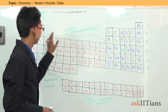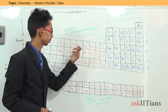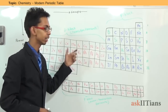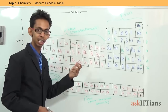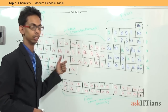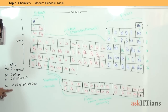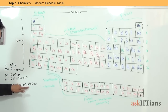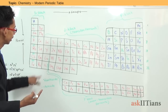Similarly, in D block elements, when we write the electronic configuration of an element belonging to D block, we find the last electron enters the D subshell. For example, Scandium has the electronic configuration 1s2, 2s2, 2p6, 3s2, 3p6, 4s2, 3d1. The last electron is entering a D orbital, which is why it is a D block element.